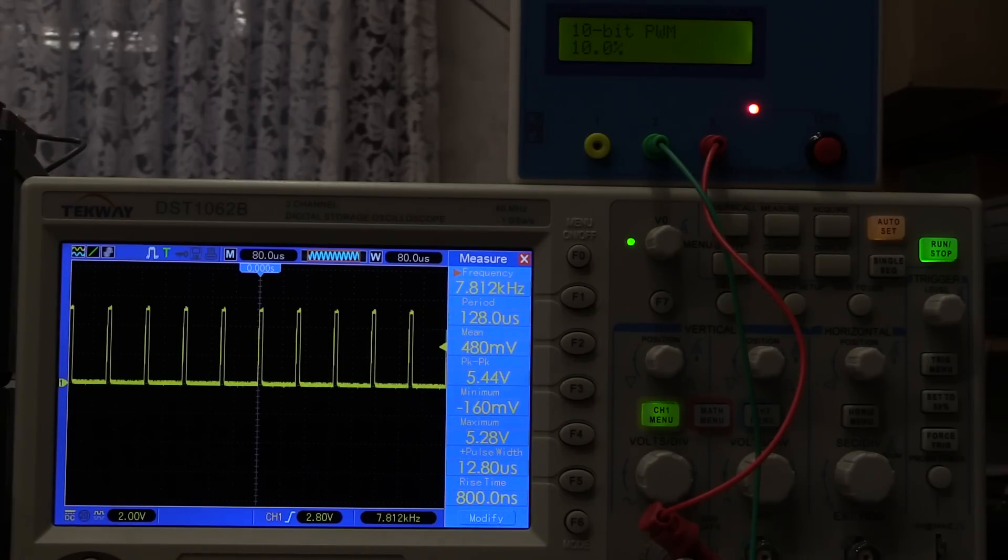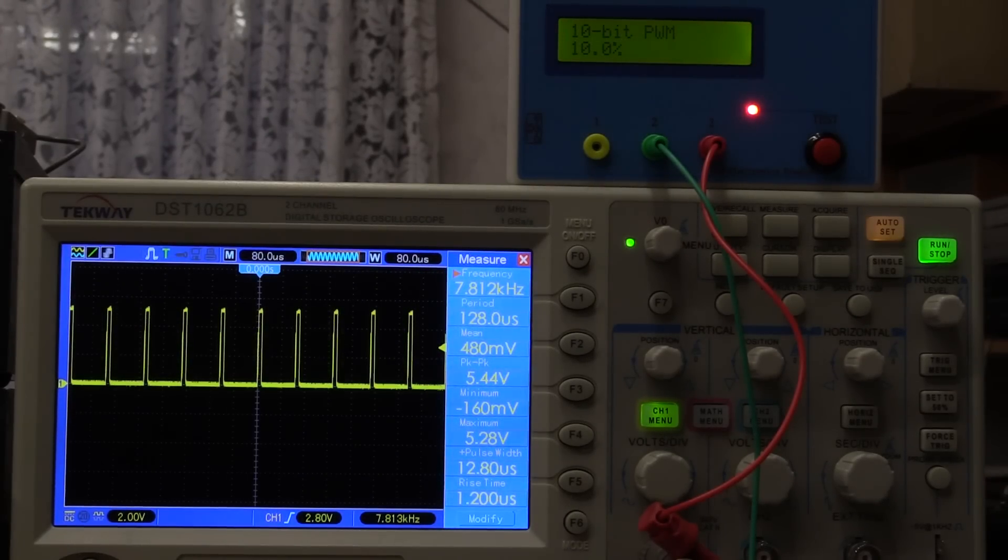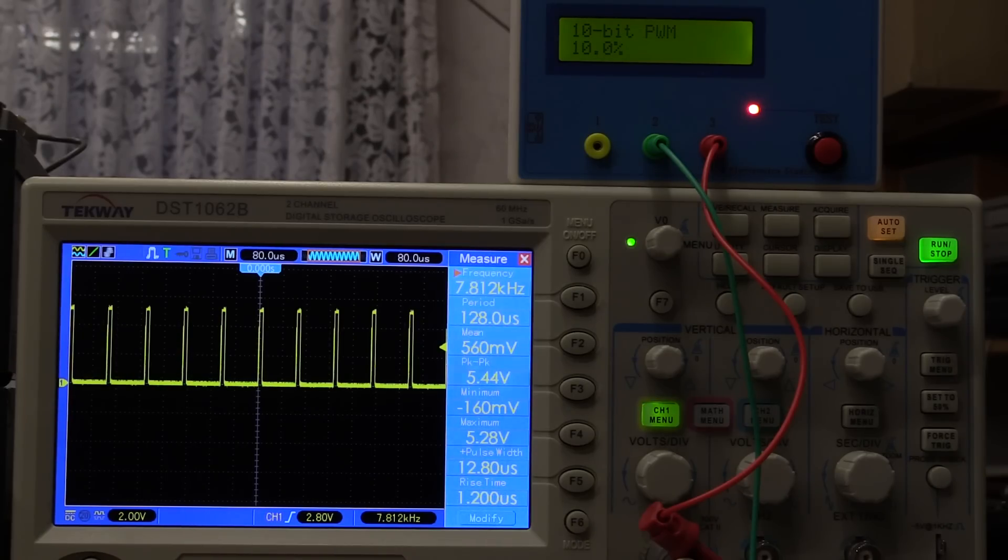And last but not least here we have the pulse width modulation. Now if you don't know what that is and what it's good for please look it up online. But basically we could go ahead hook this up to a powerful switching transistor and we could use it as a dimmer for our lights for example. So that's what that is all about the 10-bit pulse width modulation. As you can see it says 10 percent that means we have a 10 percent duty cycle on this and we can adjust it.